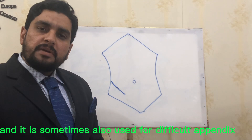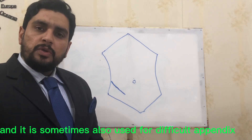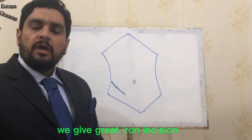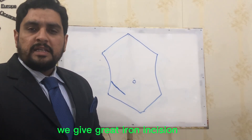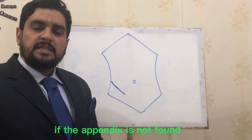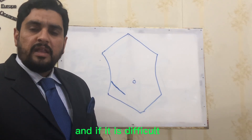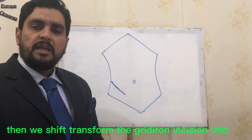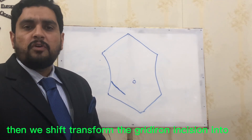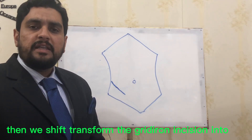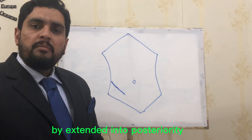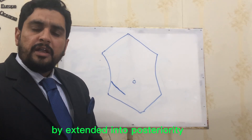It is sometimes also used for difficult appendectomy. We give the gridiron incision, but if the appendix is not found and it is difficult, then we transform the gridiron incision into the Rutherford Morrison incision by extending it posteriorly.